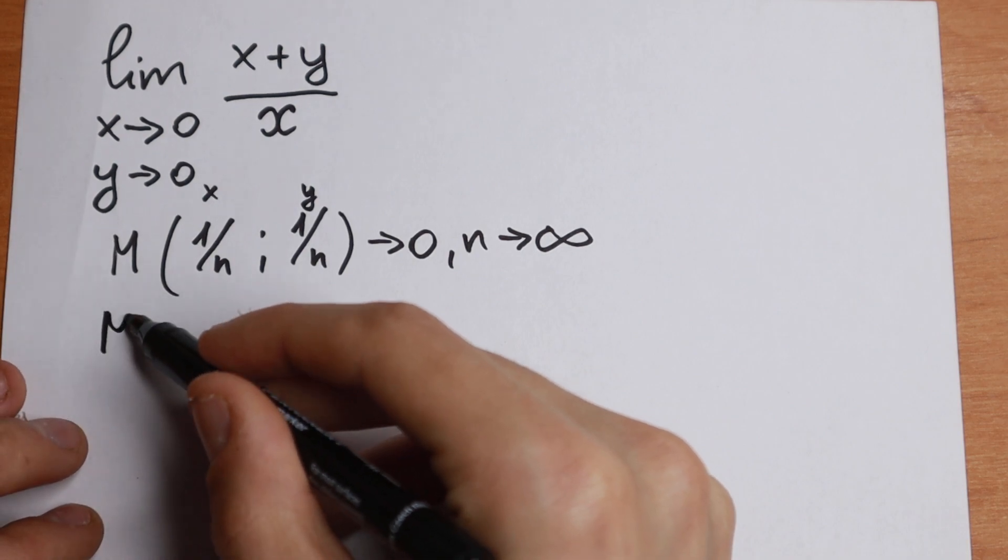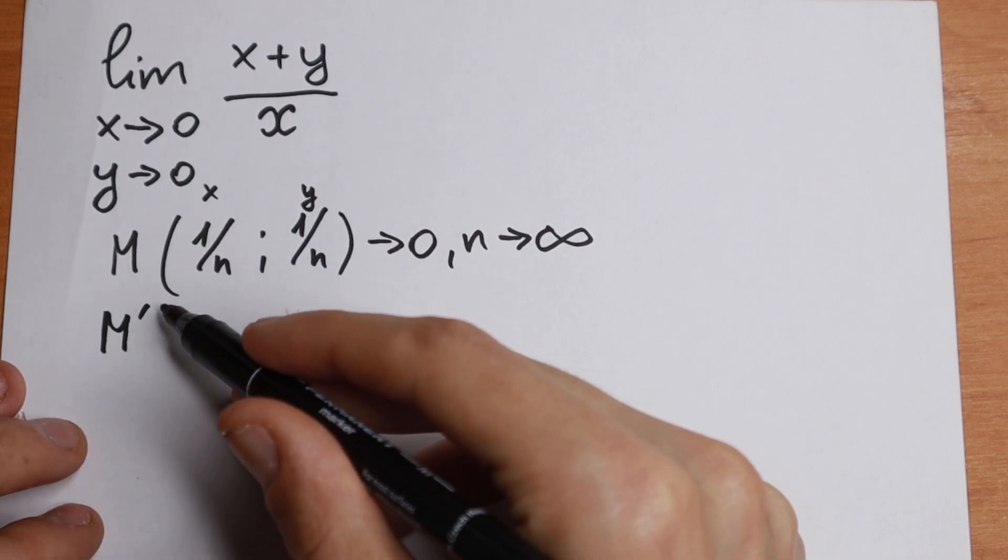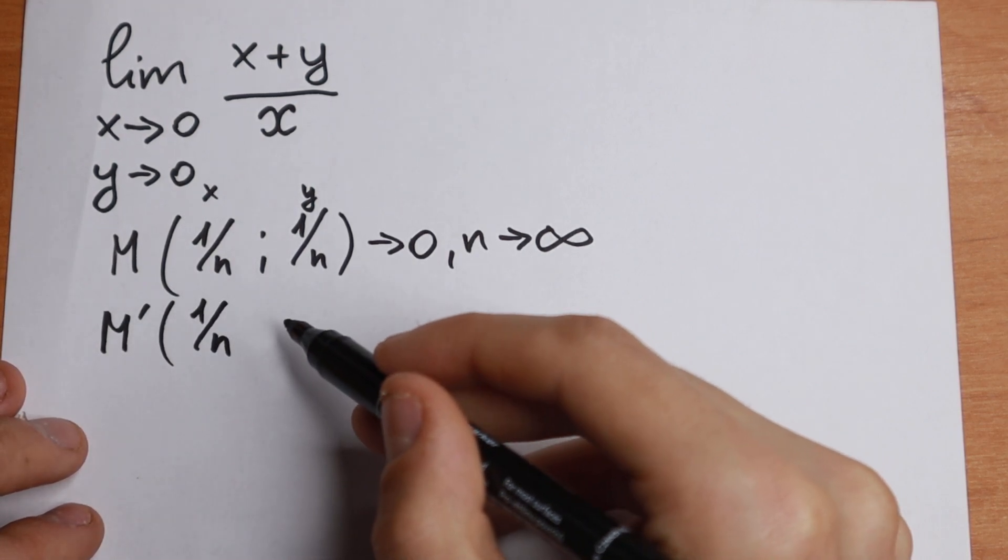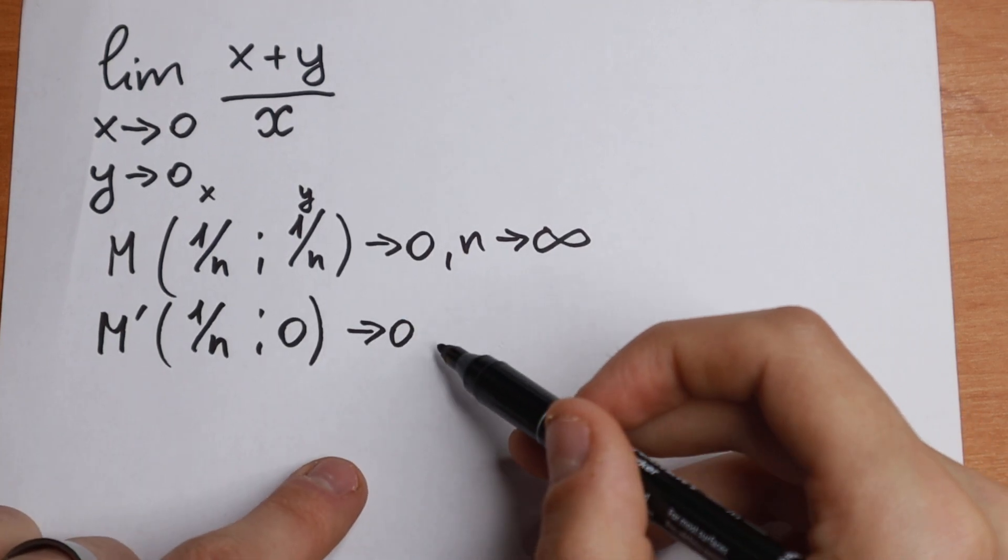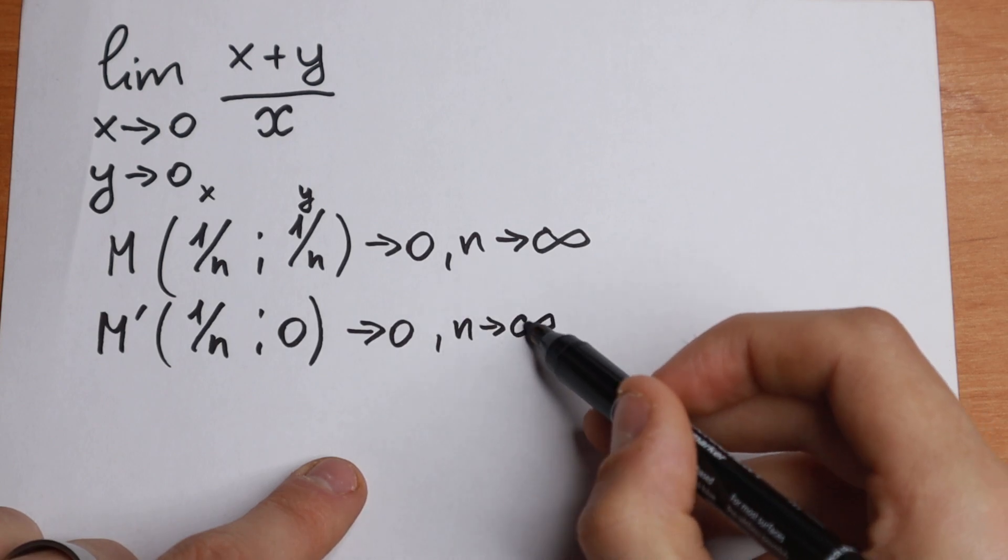And let's take another dot, for example, M'. We will have, for example, 1 over n and the second dot is 0. And this dot approaches to 0 as well, when n approaches to infinity.